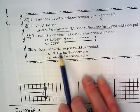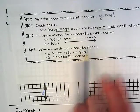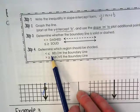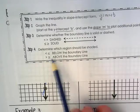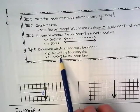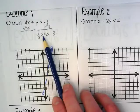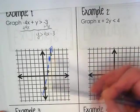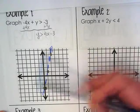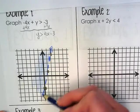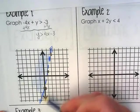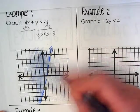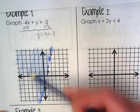And then we're going to talk about our step 4, which we've not even read yet. Step 4 says we're going to determine which region should be shaded. If it's less than or less than or equal to, we go below the line. If it's greater than or greater than or equal to, we go above the line. And this one is greater than, so we're going to shade above the line.